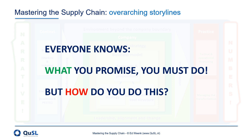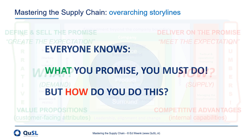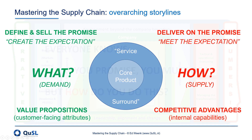Specifically, they make promises to their customers. And then they need to live up to the expectations created. That's the fundamental question addressed by the story of what and how. It's about aligning promise and delivery.